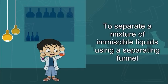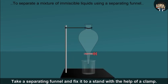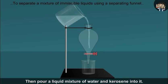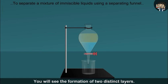To separate a mixture of immiscible liquids using a separating funnel. Take a separating funnel and fix it to a stand with the help of a clamp. Then pour a liquid mixture of water and kerosene into it. Allow the mixture to stand undisturbed for some time. You will see the formation of two distinct layers.